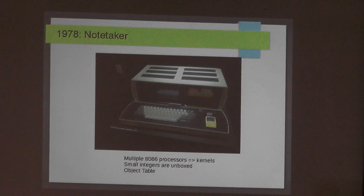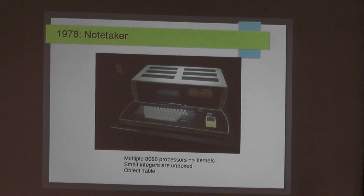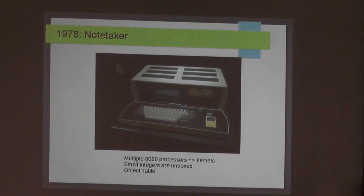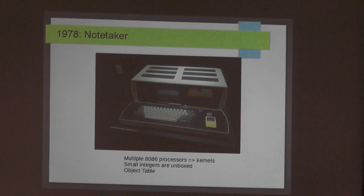Around the same time, the Smalltalk group was very frustrated that Smalltalk only existed within Xerox. So they built the Note Taker — it looked like a big sewing machine where you put the keyboard in front and could carry it aboard. It had a mouse and a graphical user interface. It ran an updated version called Smalltalk 78, developed specially for it. It had three or four 8086 processors — one for graphics, one for the bytecode interpreter, one for the network, one for other I/O. They built about five of these, and then an executive from New Jersey came to say Xerox did not want microcomputers, so it died.